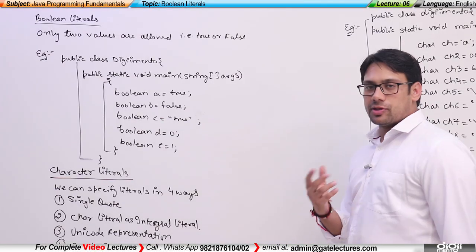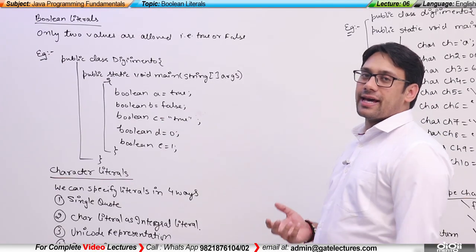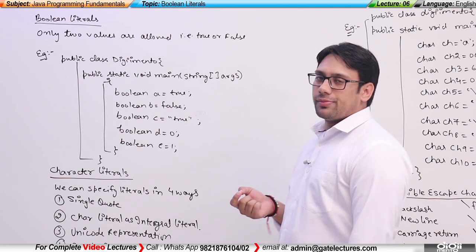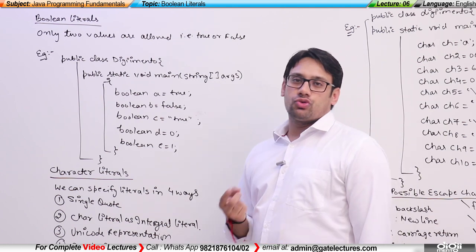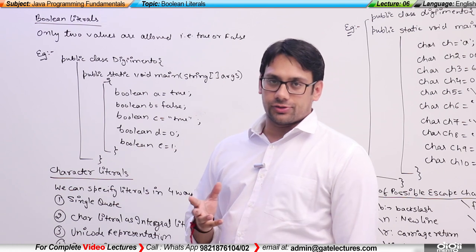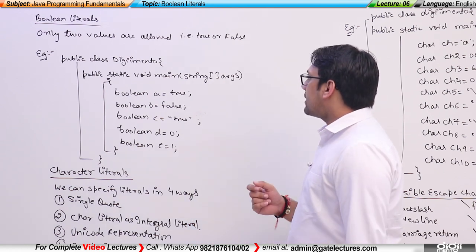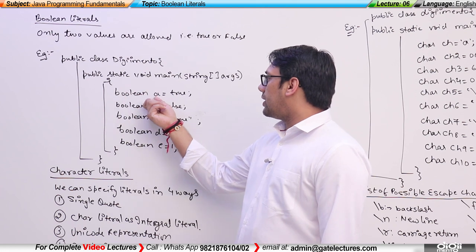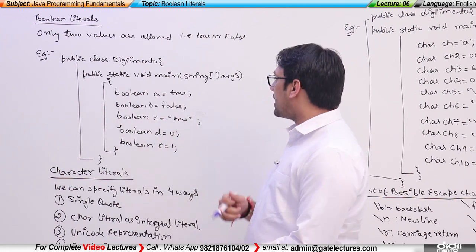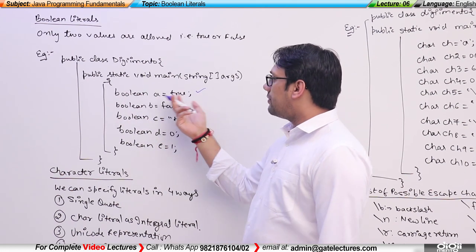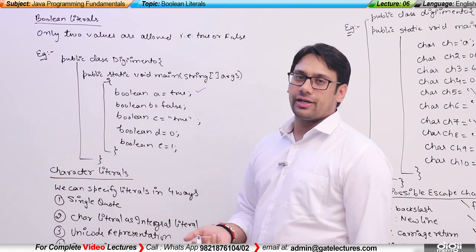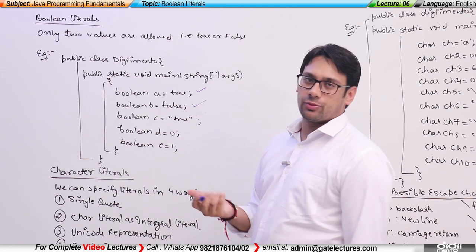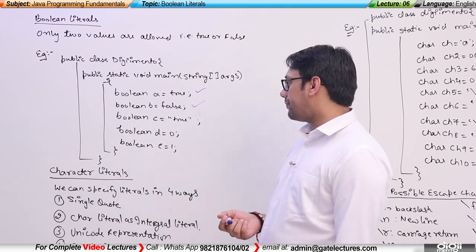Here we are checking about Boolean literals as well as character literals. As you can see, Boolean variables can only take two values, that is true and false. For example, if I create a variable Boolean a is equal to true, this is valid because a Boolean variable can take a true value. Similarly, Boolean b is equal to false is also valid because a Boolean variable can take a false value.